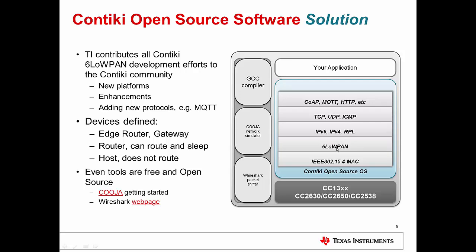On top of the abstraction layer, you have IPv6 and IPv4 addressing mechanisms. Then you have RPL — the routing algorithm. On top of that, you have data exchange support, whether you want to use TCP, UDP, or ICMP. And then on top of that, the applications — whether you want to run a CoAP server, MQTT, HTTP, or your own proprietary application alongside these.